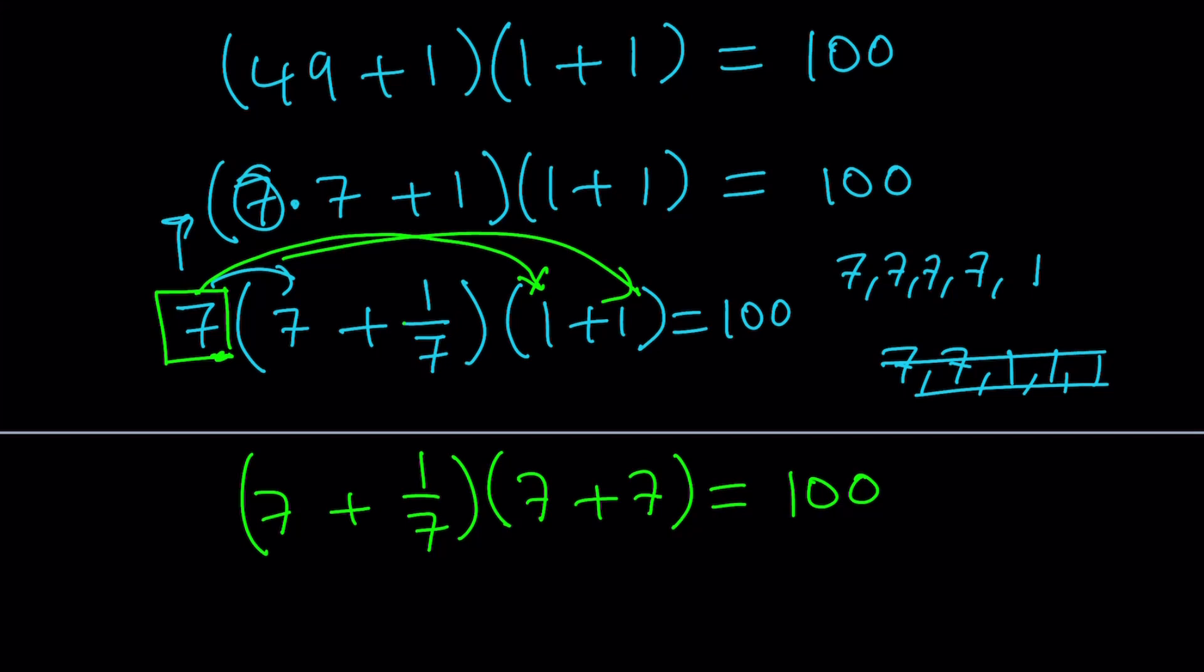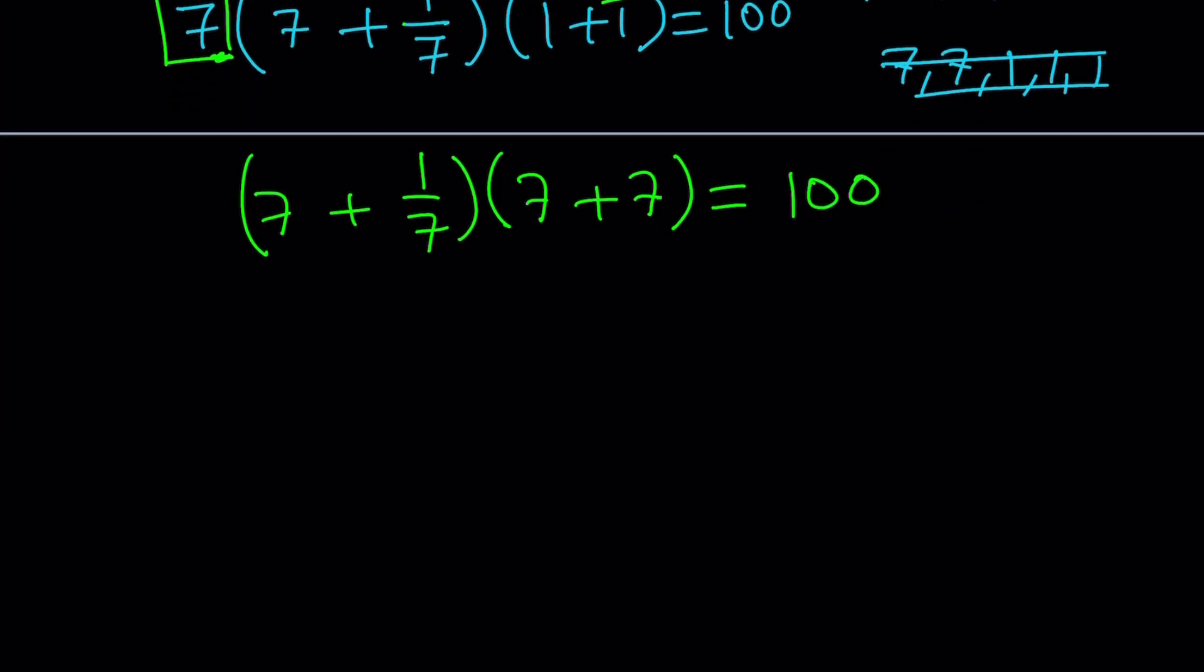But let's go ahead and check it out. What is 7 plus 1 over 7? That is 50 over 7. And what is 7 plus 7? It is 14. 7 goes into 14 two times. Cancel out or cross cancel. 50 times 2 equals 100. That's how I work backwards to give you this solution.